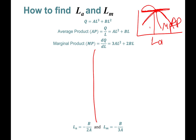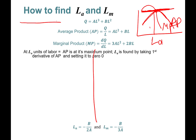At this maximum point, the slope is 0, so the slope of the tangent line is going to be 0. LA units of labor is where the average product curve is at its maximum point.